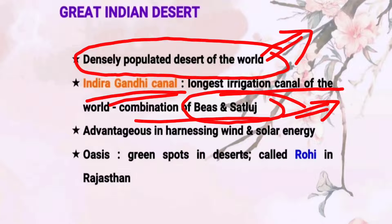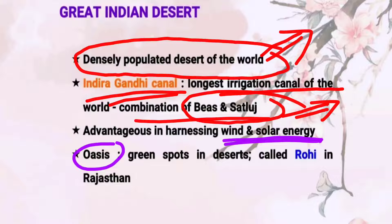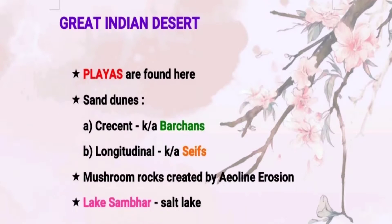The most important advantage of the desert, particularly in Rajasthan, is that it is an area from which we can harness both wind and solar energy, because in desert areas the sun shines for most hours of the day. We can also find oases in those parts — oases are the green spots found in desert areas. The oases in Rajasthan are called by the name Ruhi.